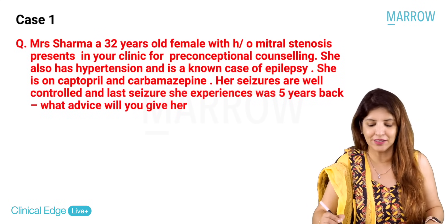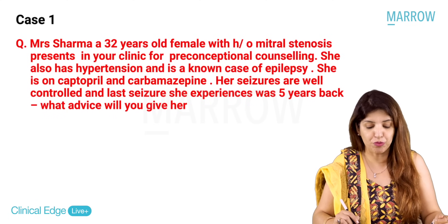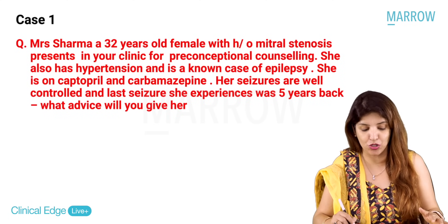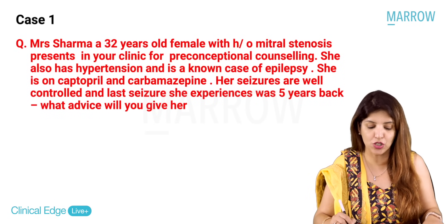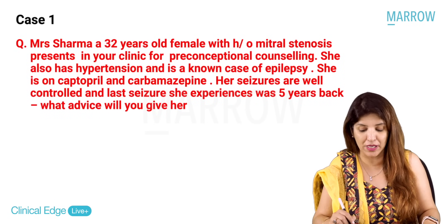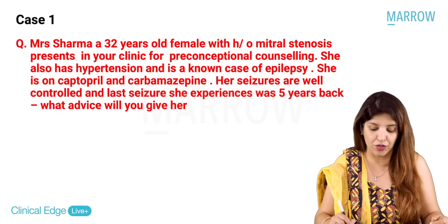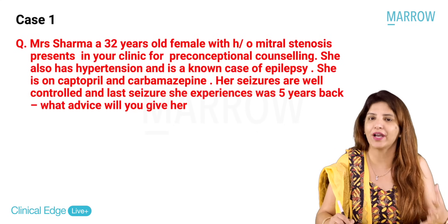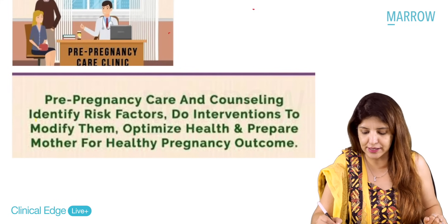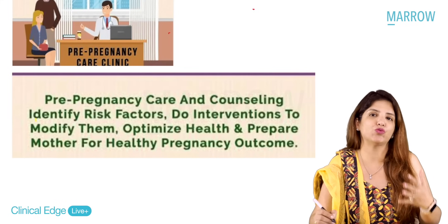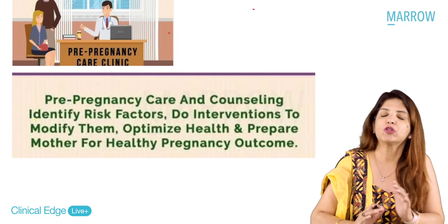Our first patient is Mrs. Sharma, a 32-year-old female with history of mitral stenosis presenting for preconceptional counseling. She also has hypertension and is a known case of epilepsy. She is on captopril and carbamazepine. Her seizures are well controlled and the last seizure was five years back. What advice are you going to give her?